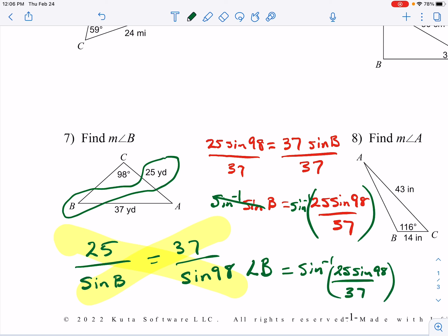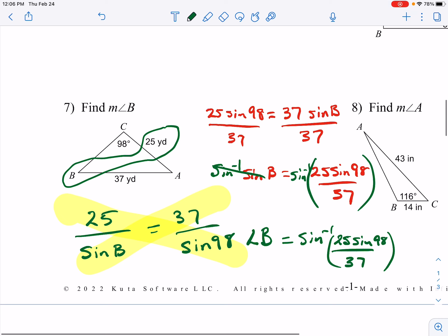Make sure to put a parenthesis around that whole fraction when you type it into your calculator. Second sine, 25 sine 98, divide 37. I get about 41.997. If I go to the nearest tenth, that would make it 42. So angle B is about 42.